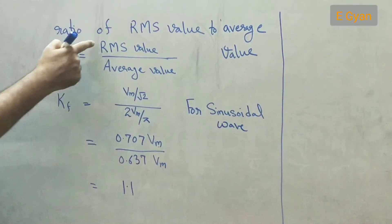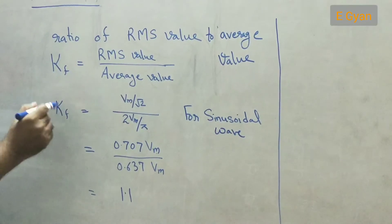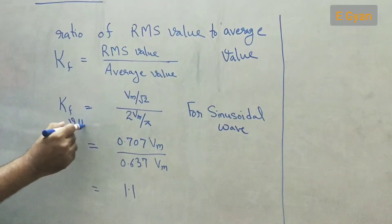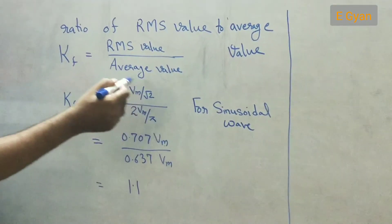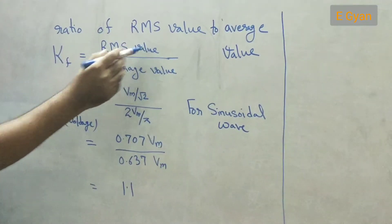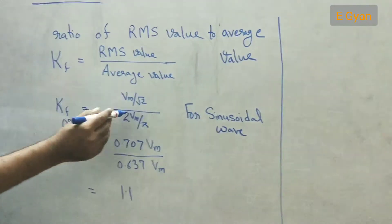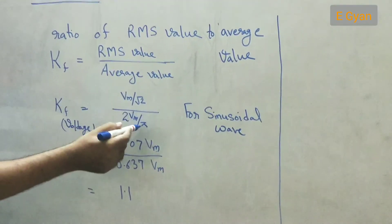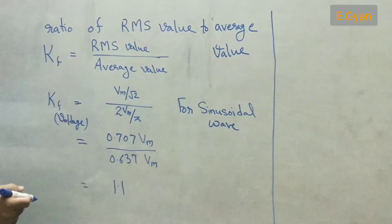As we know the RMS value of any alternating quantity, if we take for voltage, that means if we are calculating this for voltage, then it will be Vm upon root 2. As we know that RMS value of alternating quantity is maximum value upon root 2 and average value is denoted as 2Vm by pi. That means twice the maximum value divided by pi.